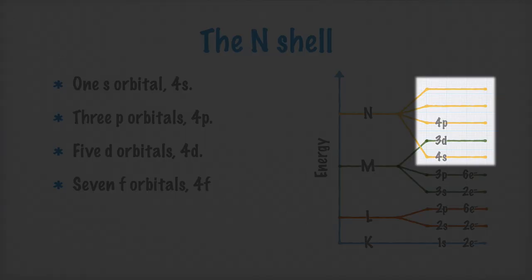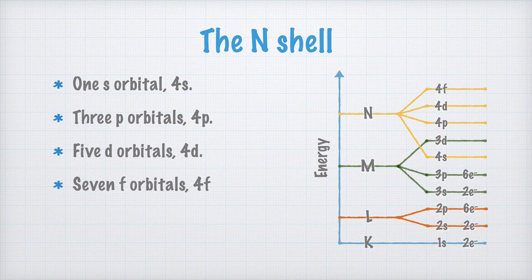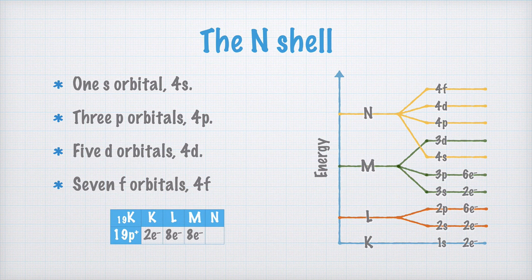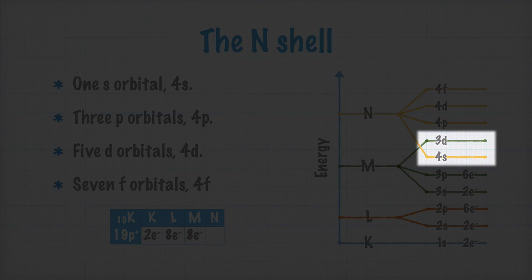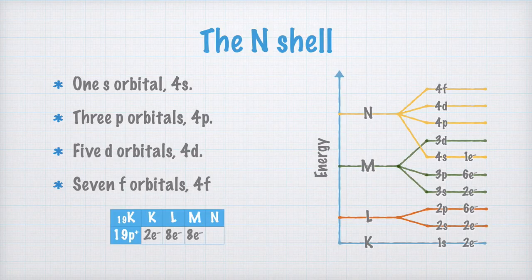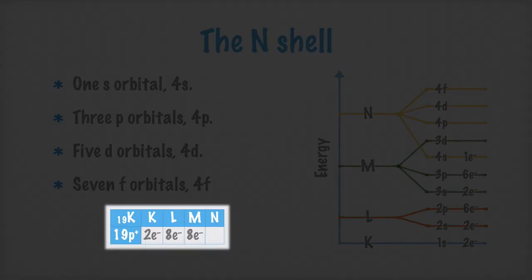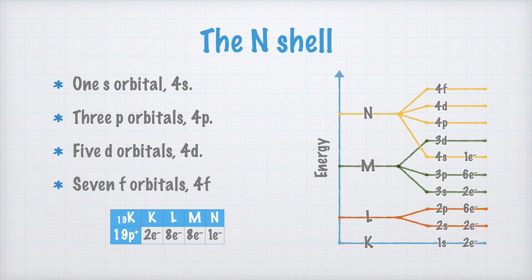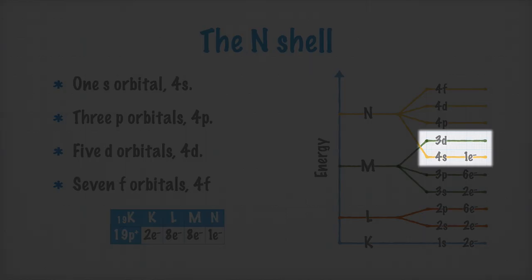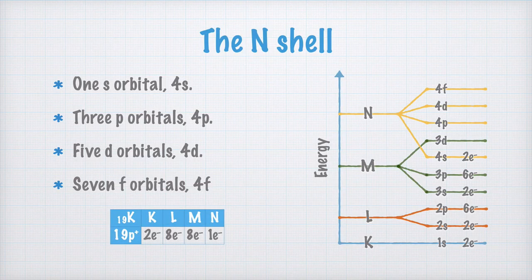The 4s and the 3d orbitals actually overlap. What does this mean for potassium with atomic number 19? Well, the 19th electron isn't placed in the 3d orbital of the M-shell. Instead, it ends up in the 4s orbital of the N-shell, because there its energy is lower. Thus, in the N-shell of potassium, there is one electron. The next electron must also be placed in the 4s orbital of the N-shell, like this.